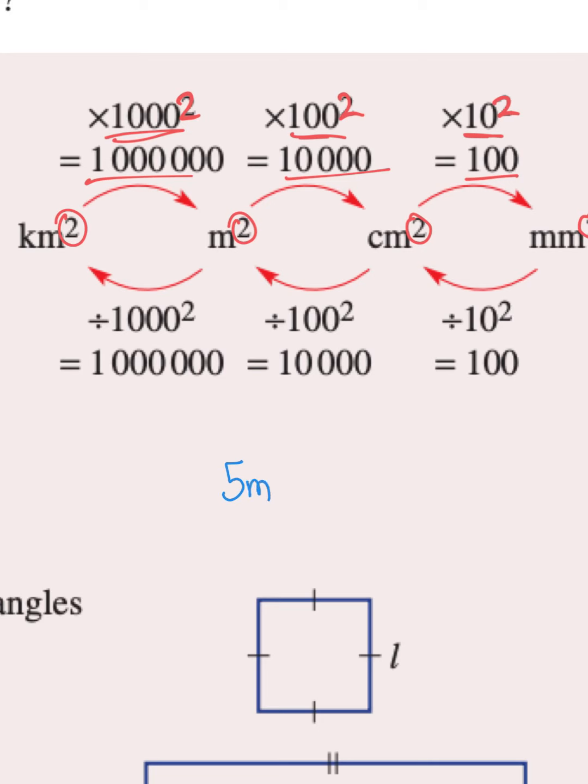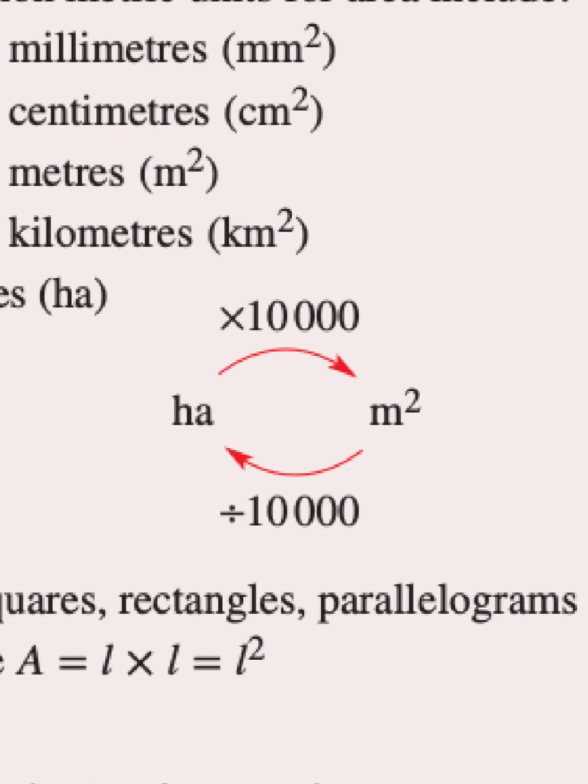So say for example you wanted to convert five meters squared to centimeters squared. So we know to get from meters to centimeters you normally times by 100, but since this is area and everything's in squared, we are going to put a little squared sign up there. So your answer is going to be five times a hundred squared, which is going to be 50,000 because 100 squared is 10,000, so five times 10,000 is 50,000 centimeters squared.